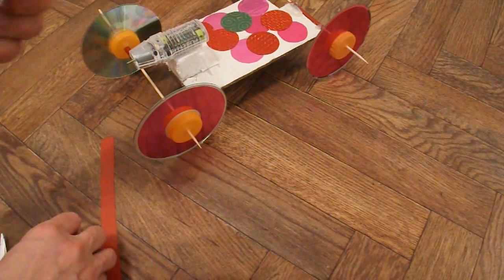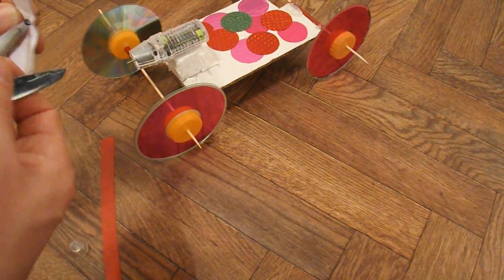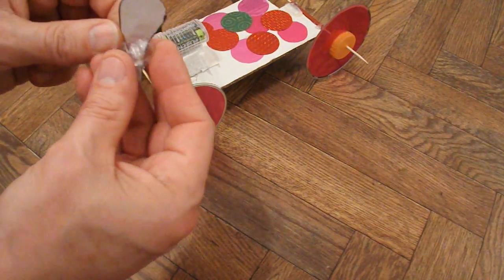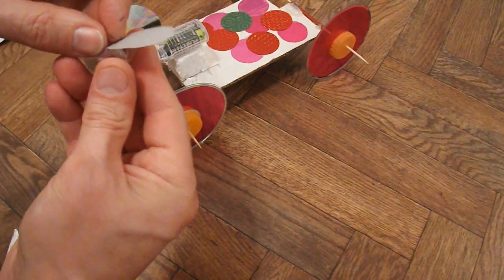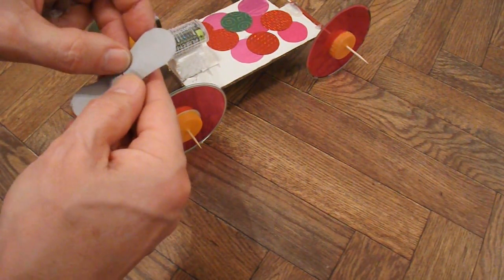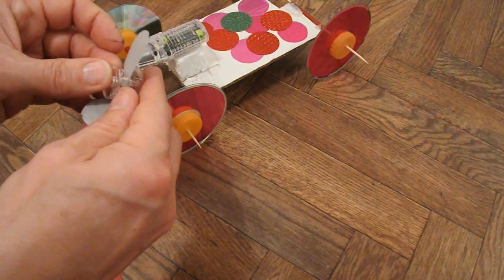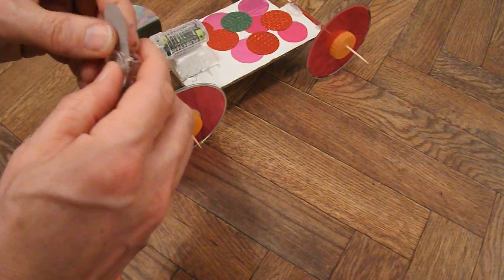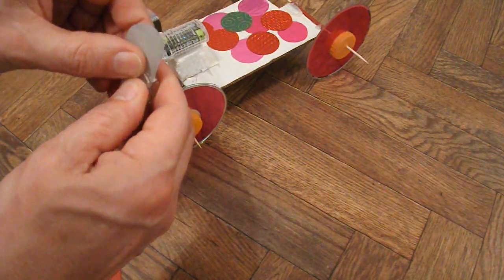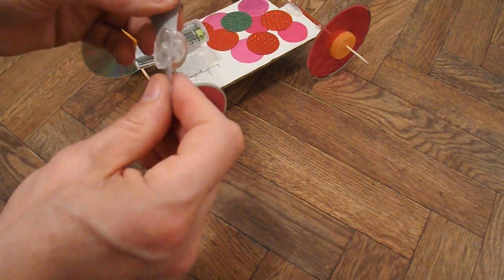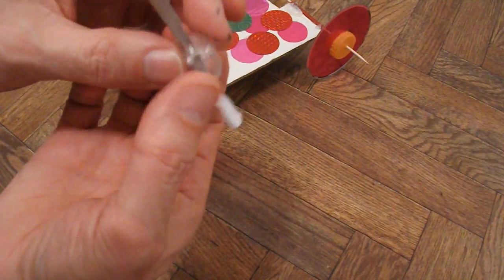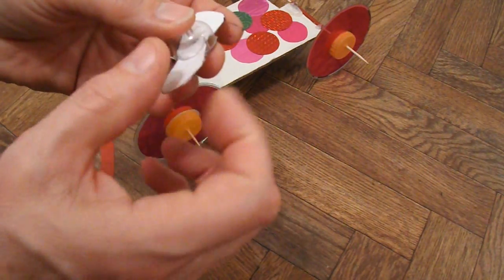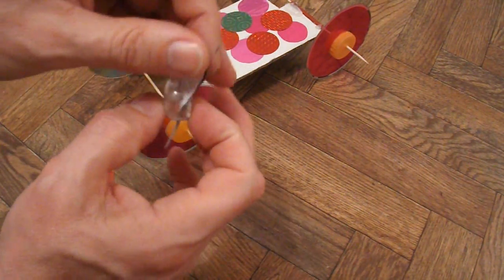I need to make that hole a little bit bigger again. There we are, and the shape of that little plastic nose cone actually makes the shape of the propeller. Twists it for us.